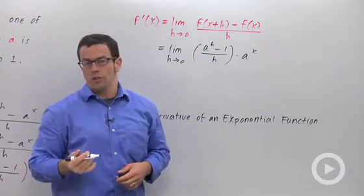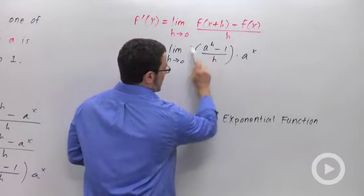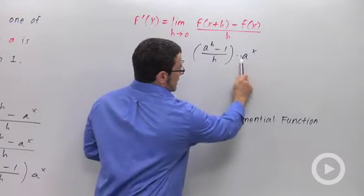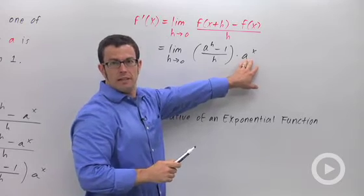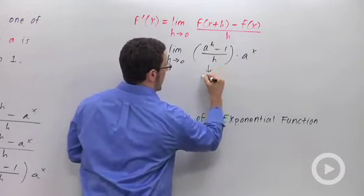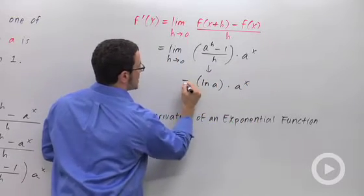Now, one of the things that we showed in a previous episode was that the limit of this quantity was actually the natural log of a. Now, this is actually going to be constant with respect to h. As h goes to 0, nothing happens to a to the x. But this thing approaches ln of a. And so that's our derivative.